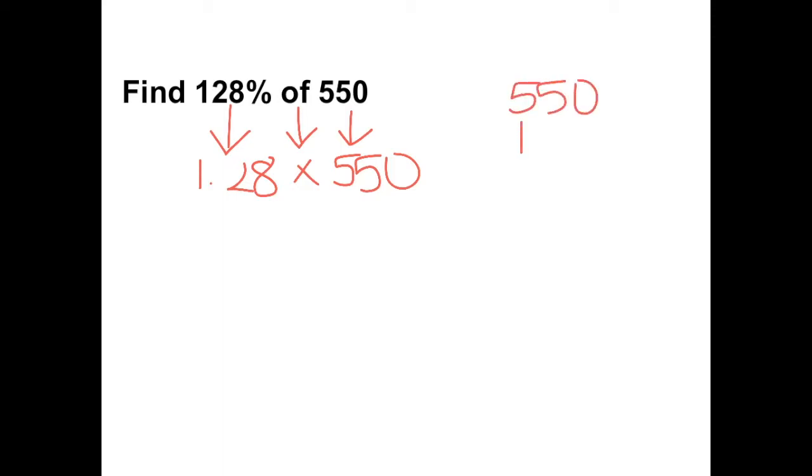Let's multiply. When we multiply, we don't line up the decimals. 8 times 0 gives us 0. 8 times 5 gives us 40. 8 times 5 plus 4 more gives us 44.